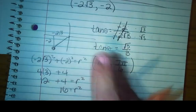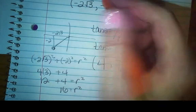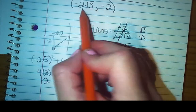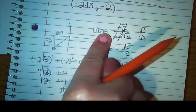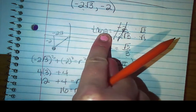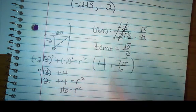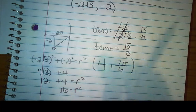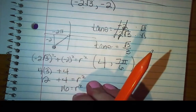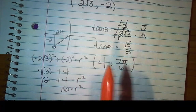So what did I do first? Use the ratio of y to x to find the tangent of θ — that tells you the angle measure. Then build a triangle, and that gives you your radius.